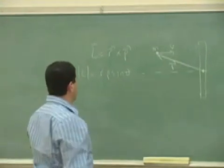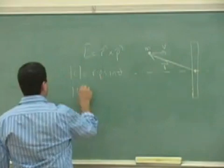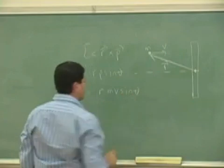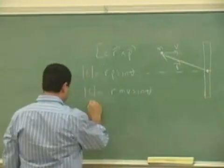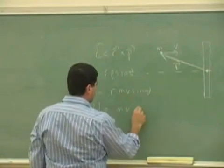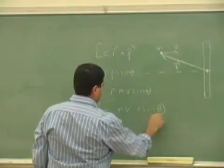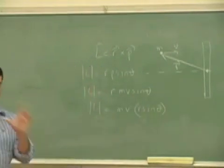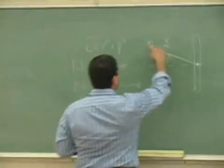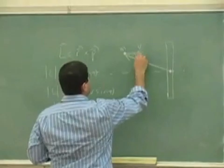So we have here r, and then p is equal to mv. Now, here's how I'm going to write this. Look. r sine of theta, I'm going to write it as a separate entity. So I'm going to have here r, v, and then theta is this angle.